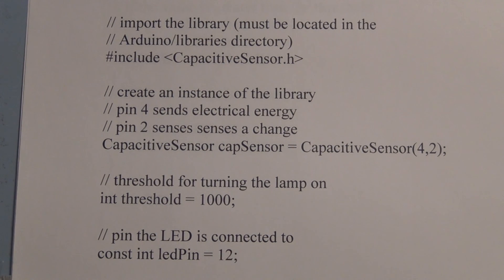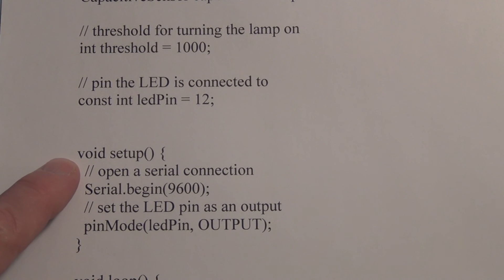Here we start the void setup and serial port communication. We're going to look at the capacitive sensor function and what value that returns. That's the value that we're looking at to be greater than this threshold of initial threshold of a thousand. And we're declaring using pin mode LED pin as an output.